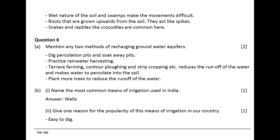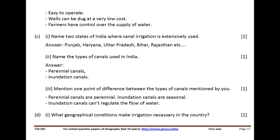Name the most common means of irrigation used in India. Answer: wells. Give one reason for the popularity of this means of irrigation in our country. Easy to dig, easy to operate. Wells can be dug at a very low cost. Farmers have control over the supply of water.